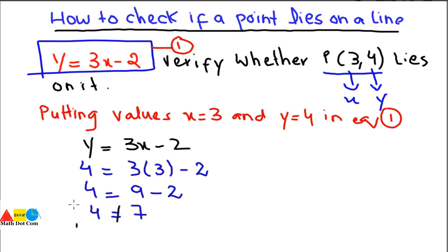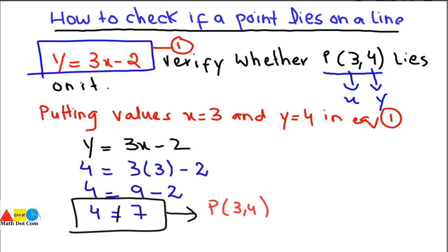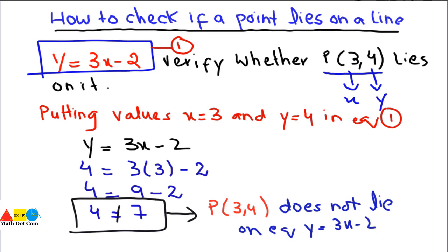It is clearly shown that 4 is not equal to 7. When you come across such a situation, this means that the point P(3, 4) does not lie on the line y equals 3x minus 2. If both sides of the equality are equal, then you can say that the given point lies on the given line.